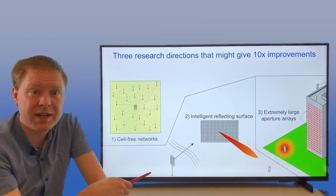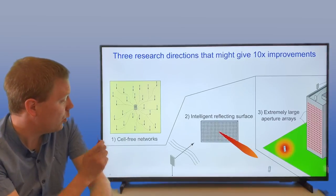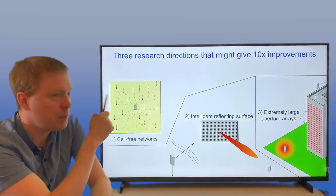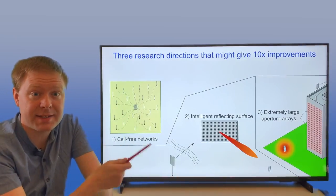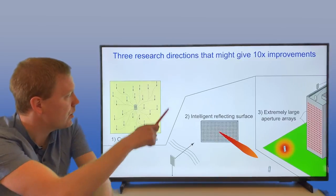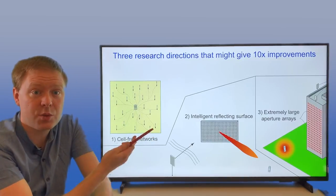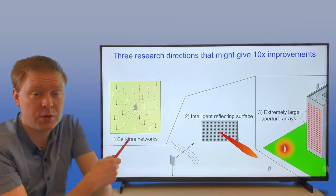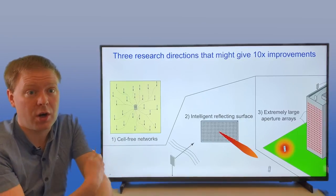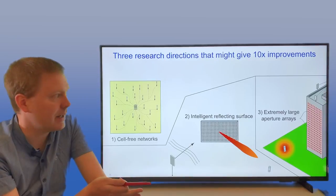Here are three of my ideas about that. One is cell-free networks, where instead of dividing the world into cells and being served by the base station in that cell, you're removing the cell boundaries. You have a lot of antennas, and you let the user be served by a subset of those ones - the ideal selection of them - so that you're taking away the interference between different cells.